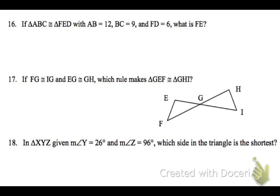On this one, triangles ABC and triangle FED are congruent, therefore corresponding parts of the congruent triangles are congruent. So if AB is 12, then FE must also be 12.